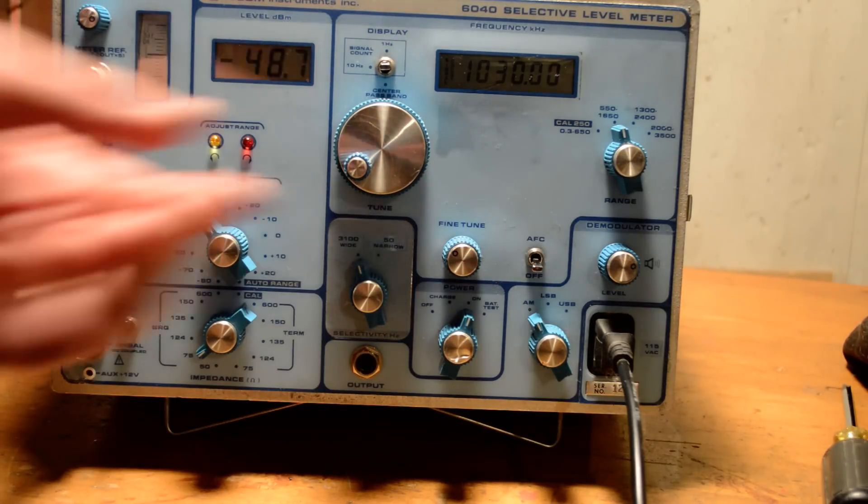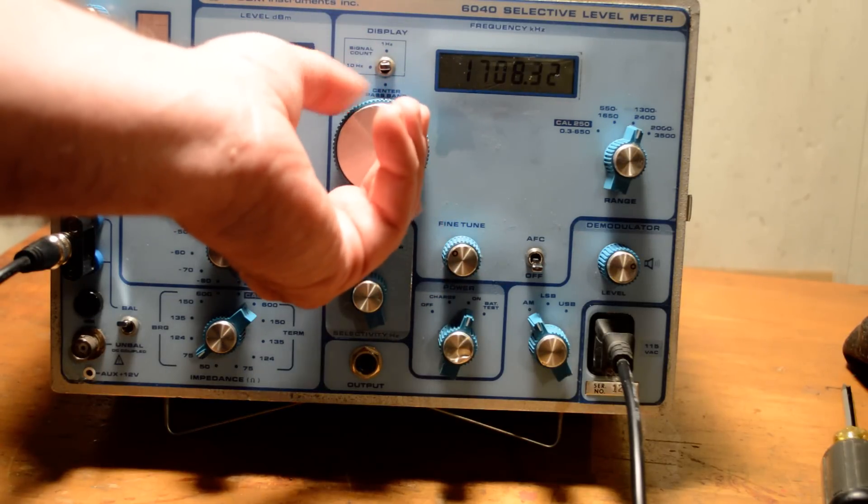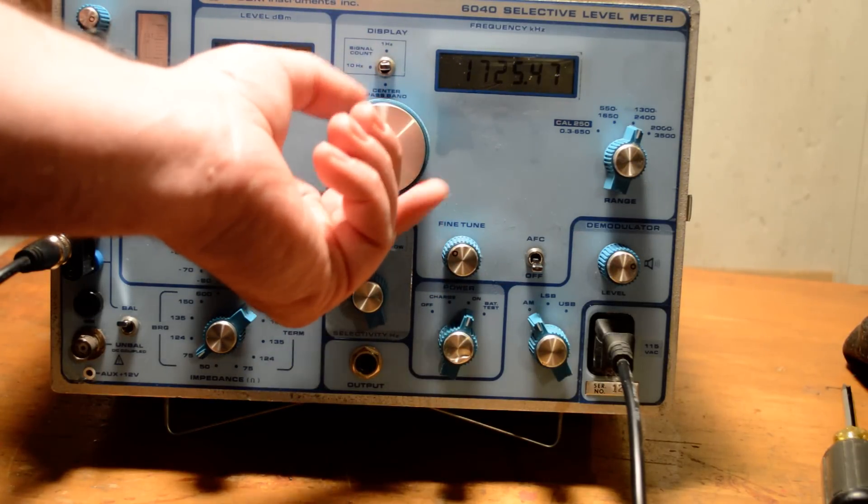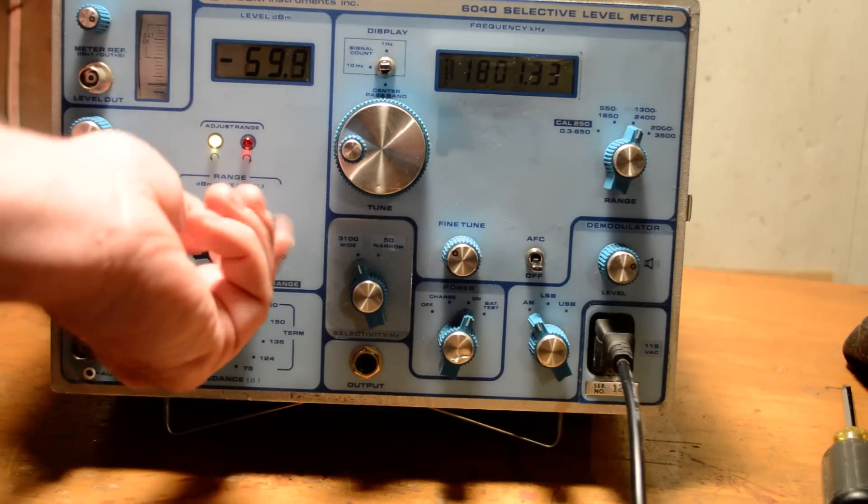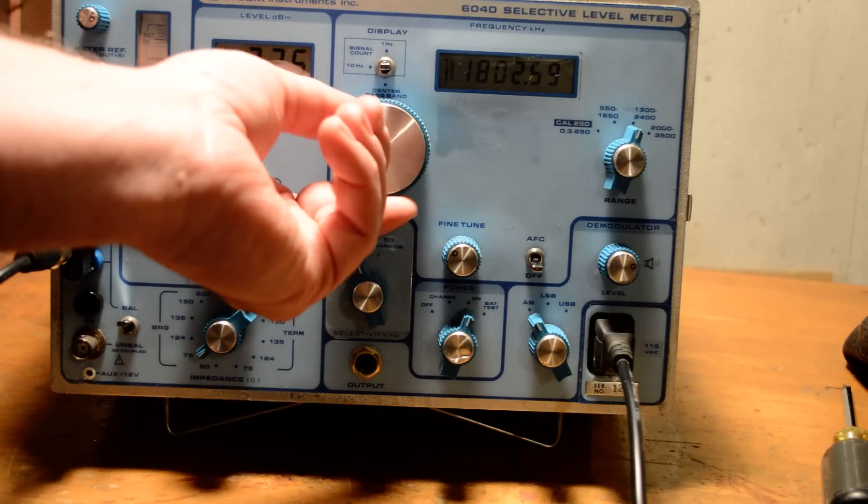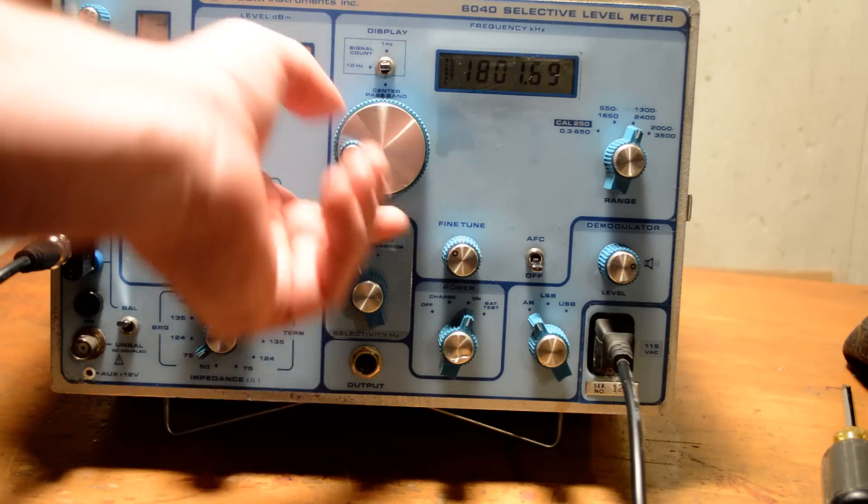Let's see what else we can find here. Amateur radio is up in here. There's some morse code here.